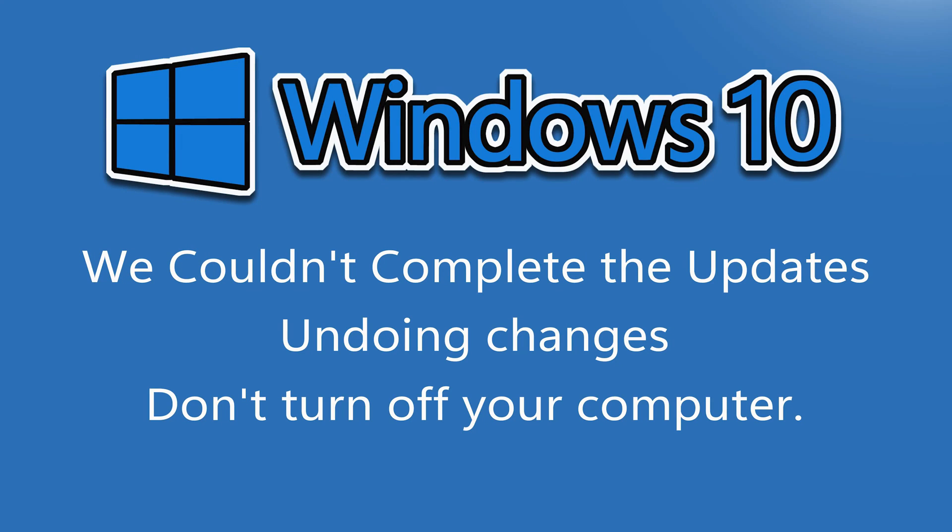The error message 'We couldn't complete the update, undoing changes' in Windows 10 typically appears when there's a problem during the installation or application of Windows updates. This message is part of the Windows update troubleshooting process and indicates that the system is attempting to revert changes made during a failed update.